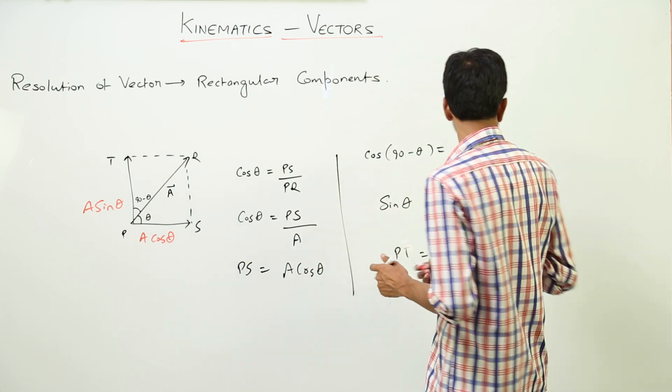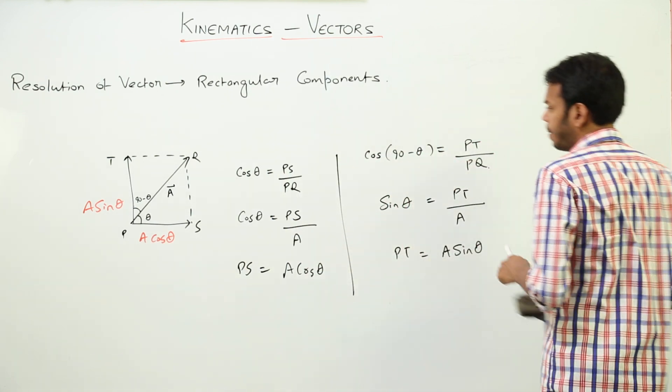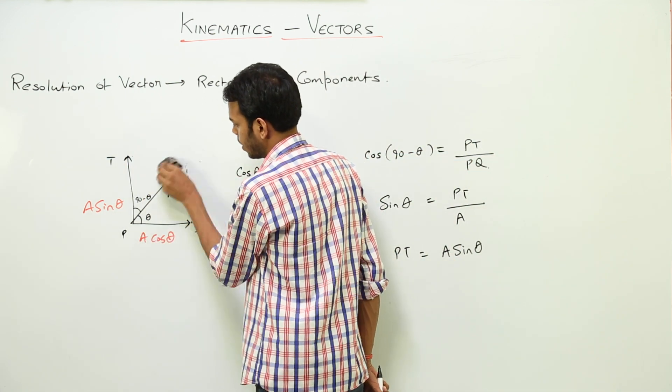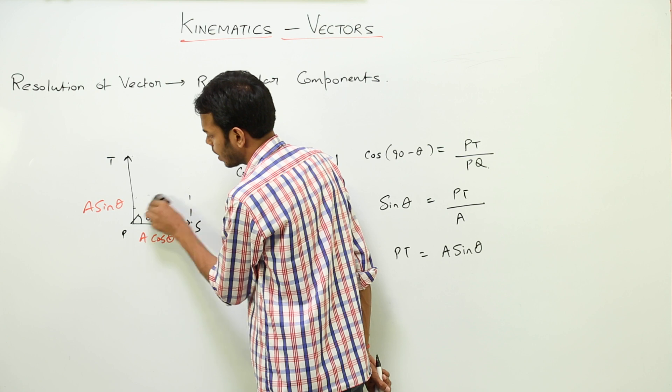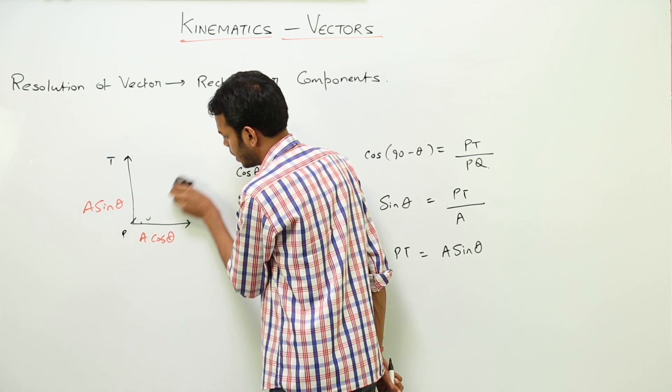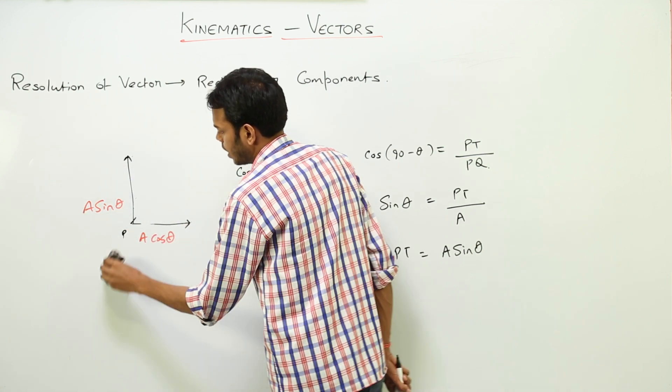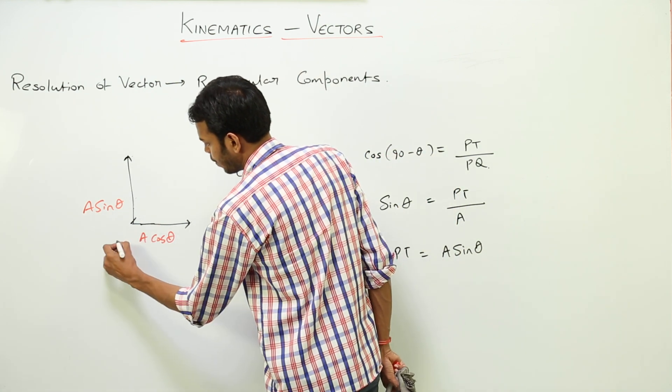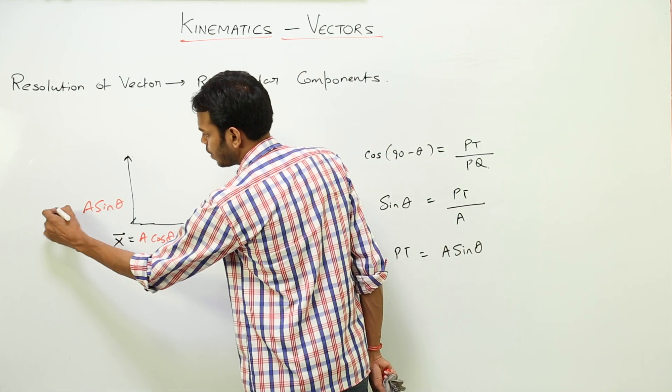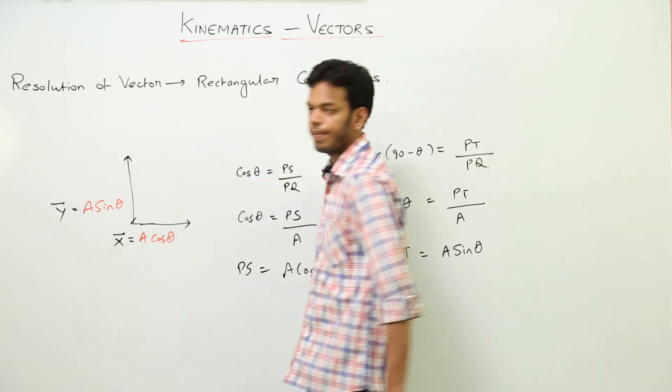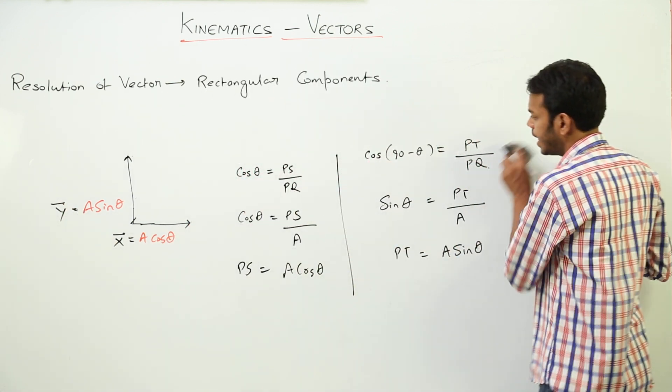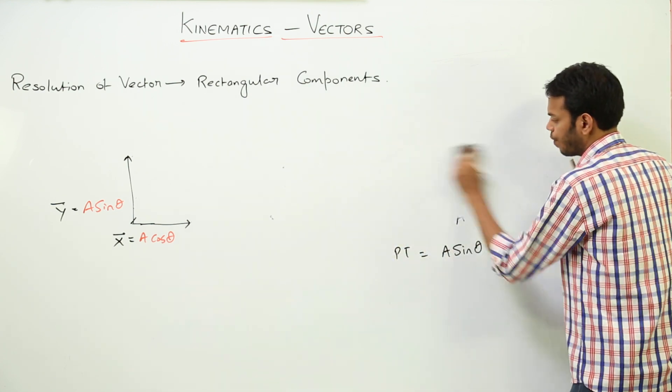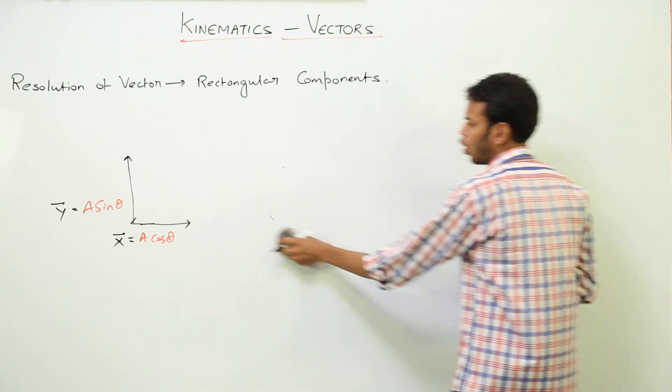Now consider this. I am omitting all these things. Let us say this vector here is vector X, this vector is vector Y. I want to find the resultant of vector X and Y. So what is the formula for resultant?